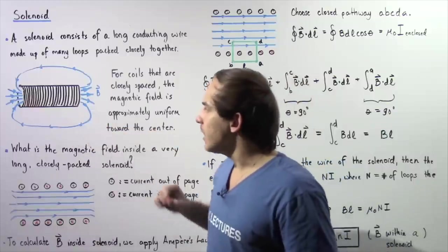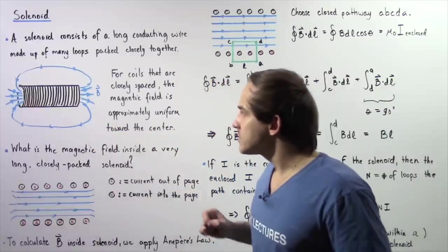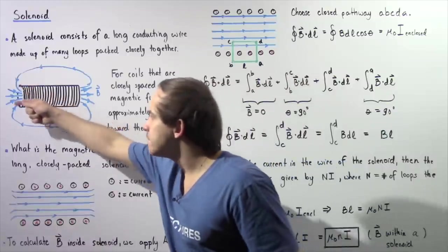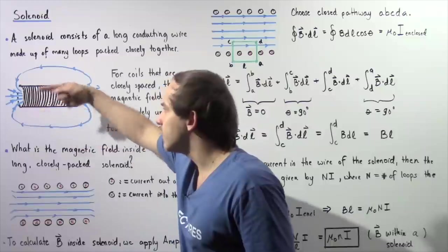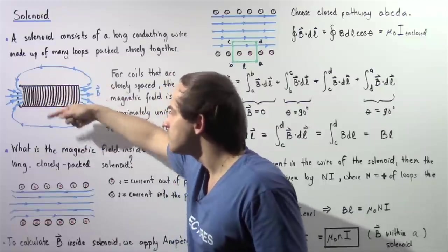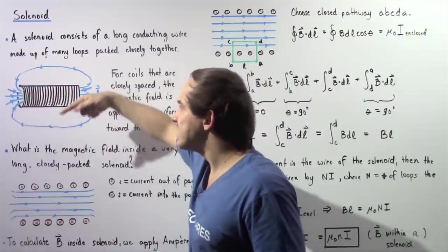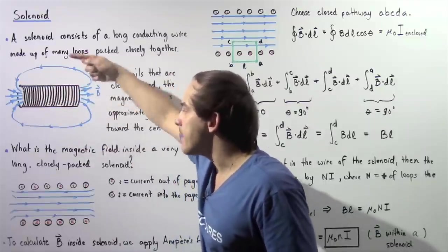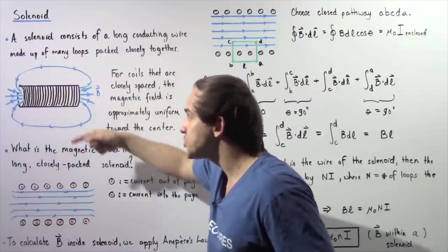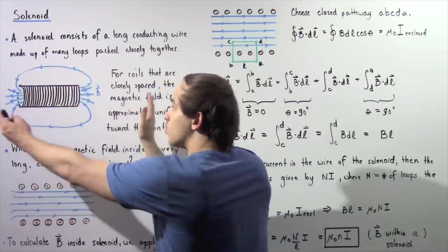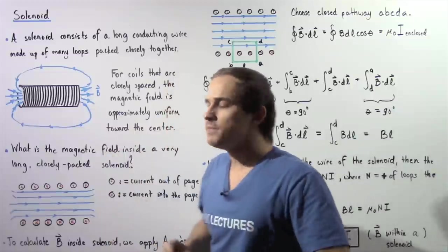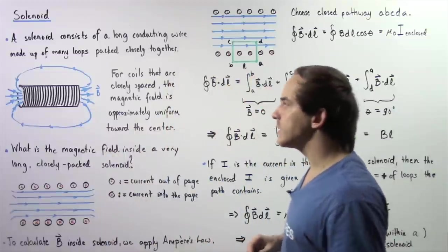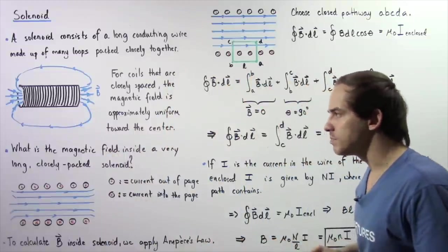Let's look at the following diagram. We have our very long continuous conducting wire which essentially forms many loops of wire packed very closely with respect to one another.